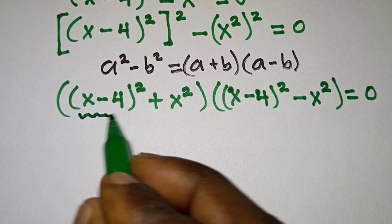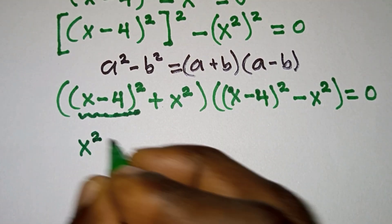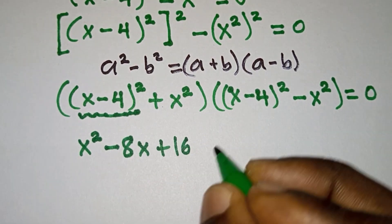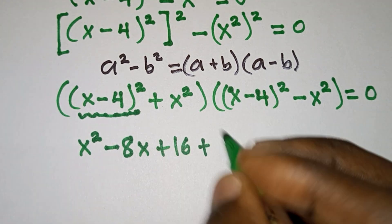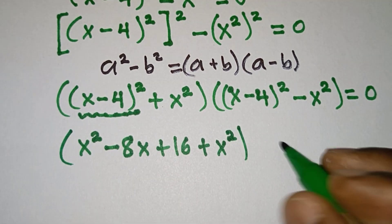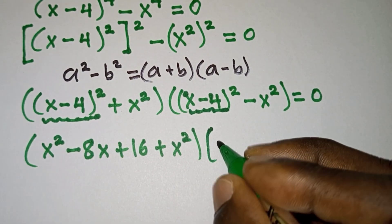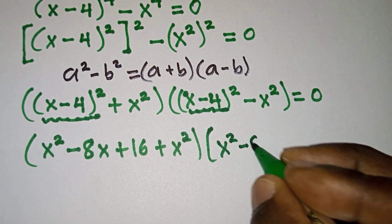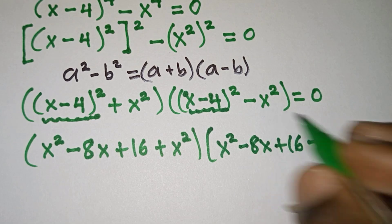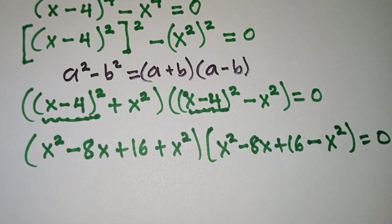Now let's expand the parentheses. First we're going to have x squared minus 8x plus 16, plus x squared. Then we will do the exact same thing for the second factor: x squared minus 8x plus 16, minus x squared, is equal to 0.